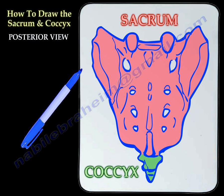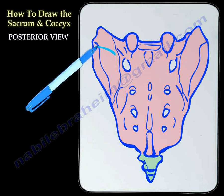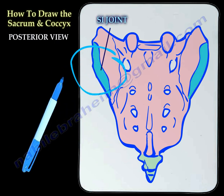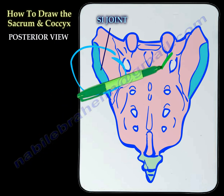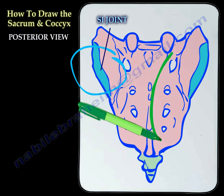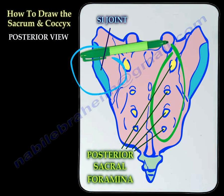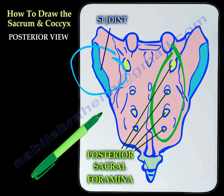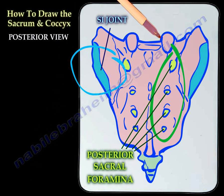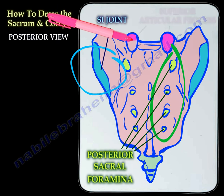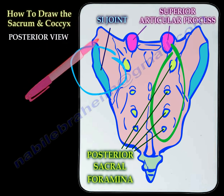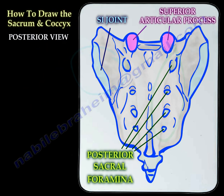Here you can see the SI joint, or the sacral part of the SI joint. It is involved in SI joint dysfunction and pain. Then you can see the sacral foramina — there are several of them, and they are the posterior part of the foramina. You can also see the superior articular process that articulates with the L5 vertebra.